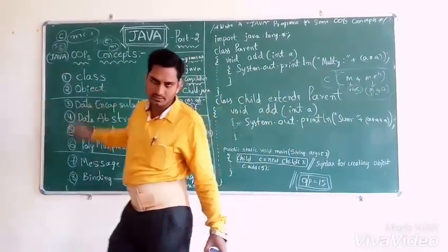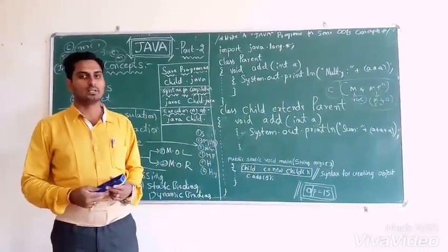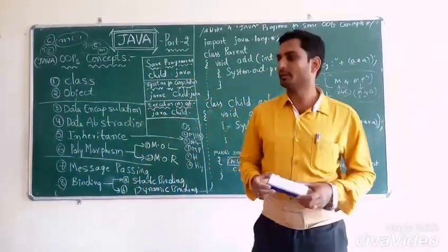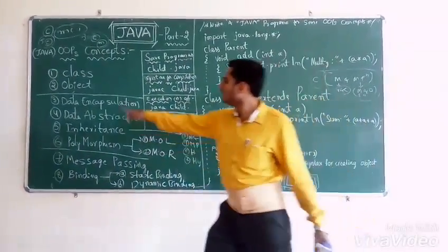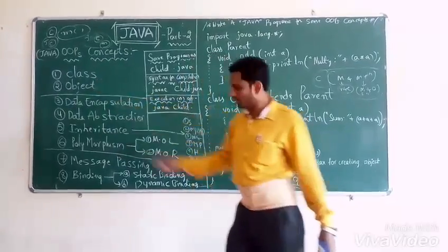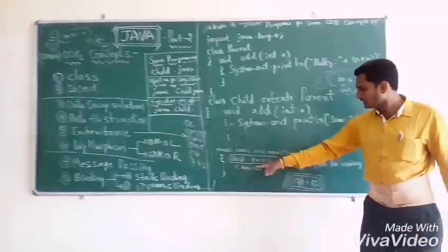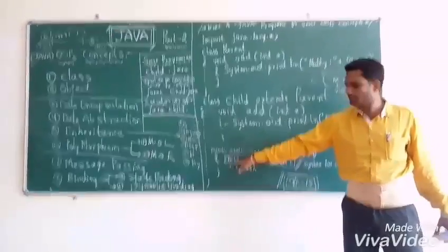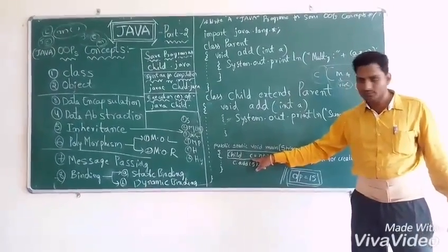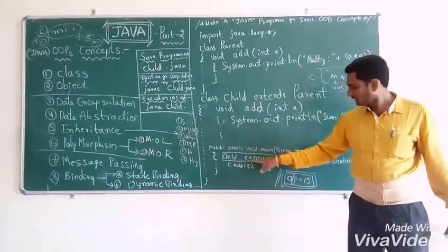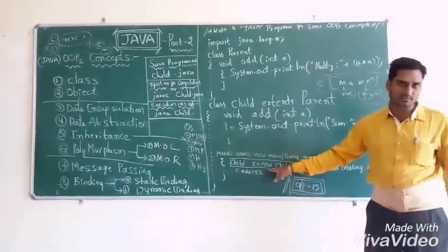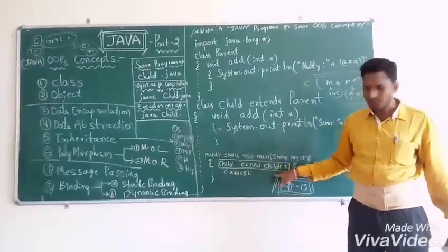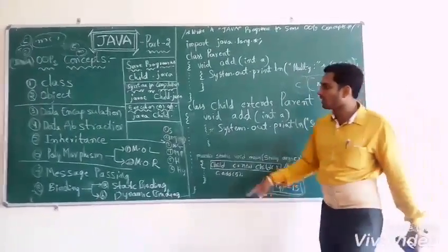The second concept is Object. Object is a blueprint of a class, and an instance of a class. The syntax for creating an object uses the class name.